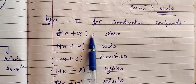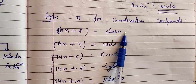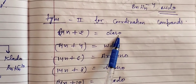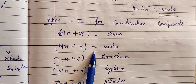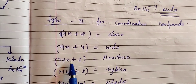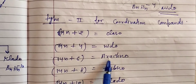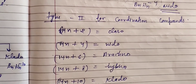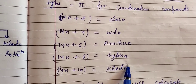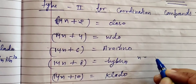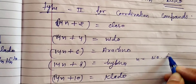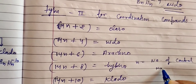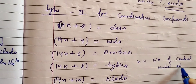Second type of questions on types of boranes use the total valence electron (TVE) formula: 14n+2 = closo, 14n+4 = nido, 14n+6 = arachno, 14n+8 = hypo, 14n+10 = clado. Here n equals the number of central metal atoms.